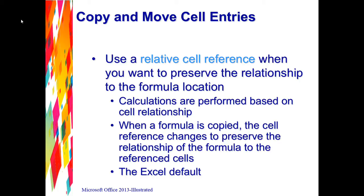You want to use relative references when you want to preserve the relationship to the formula location. When you create a formula that references another cell, Excel does not record that exact cell address for the cell being referenced. Instead, it looks at the relationship that the cell has to the cell containing the formula. So if you click on cell B12, it's not going to record B12 — it may say it's two cells above me, or two cells above and four cells to the right.